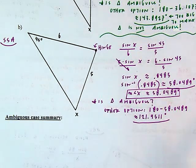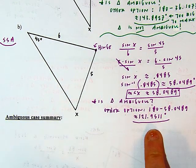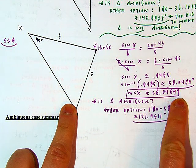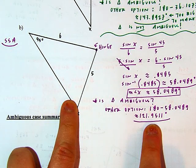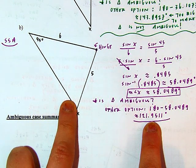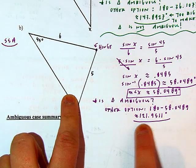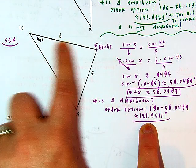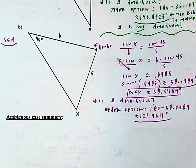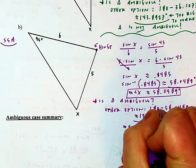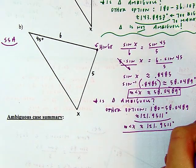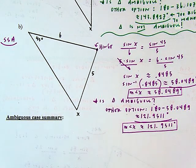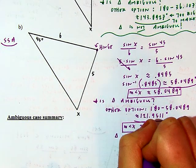Is this triangle ambiguous? The other option would be the supplement: 180 minus 58.0489 equals approximately 121.9511 degrees. Could x be 121.9511 when the triangle already has a 45-degree angle? Yes — 45 plus 121.9511 is less than 180, so this obtuse option also works. We have two possibilities, meaning this triangle is ambiguous.